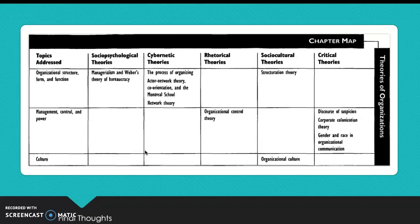Some final points about this chapter are that groups can't be separated from the context in which they work, effective groups accomplish tasks and build relationships, process and structure are tied together, and effective group work requires attention to quality of communication, as well as creative and critical thinking.